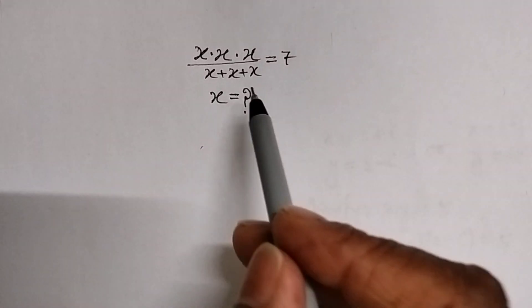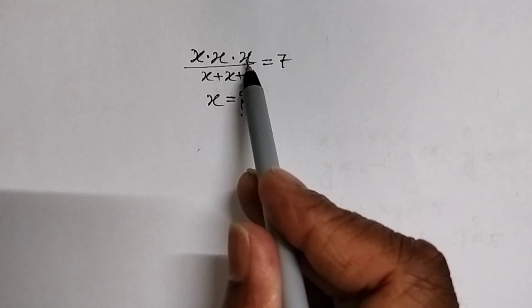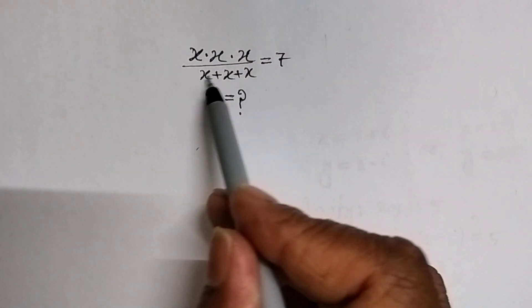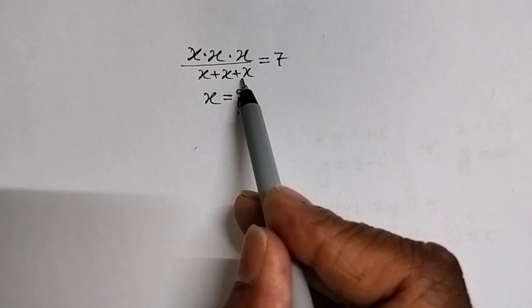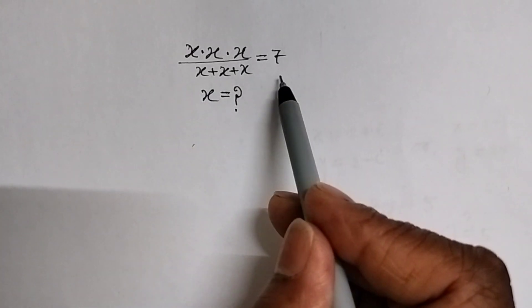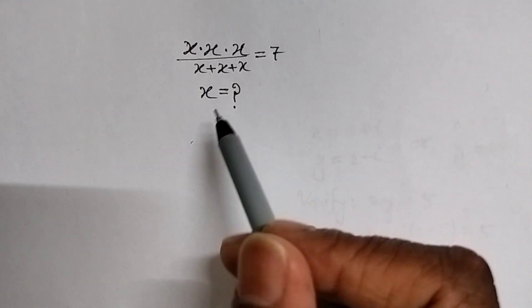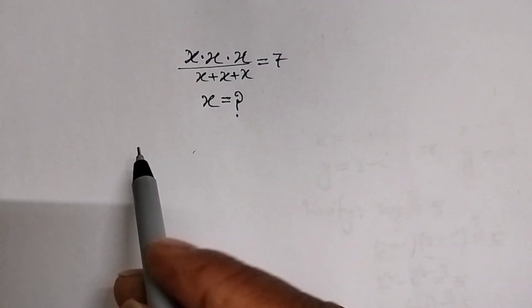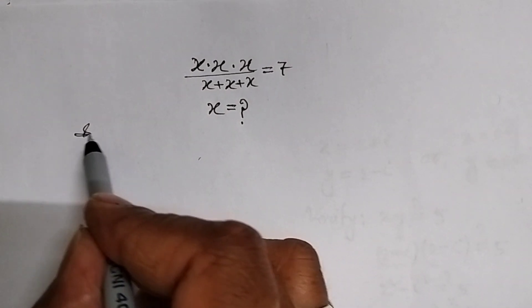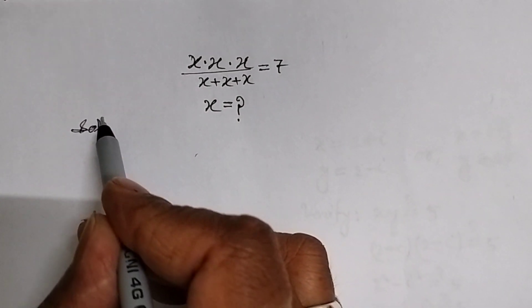We have given x into x into x, whole divided by x plus x plus x, is equal to 7. This is our given question. We will have to find the value of x. Let's see the solution.